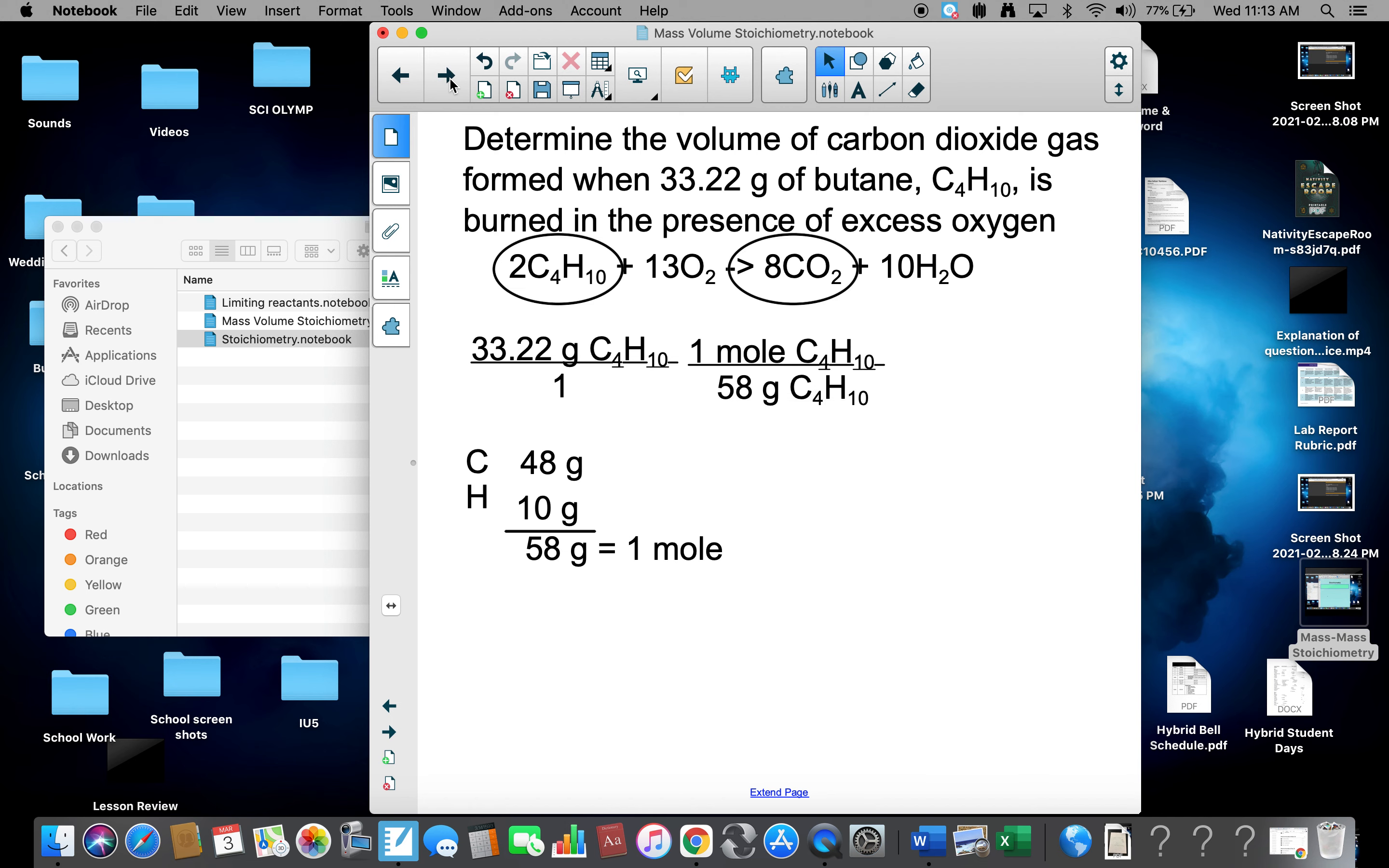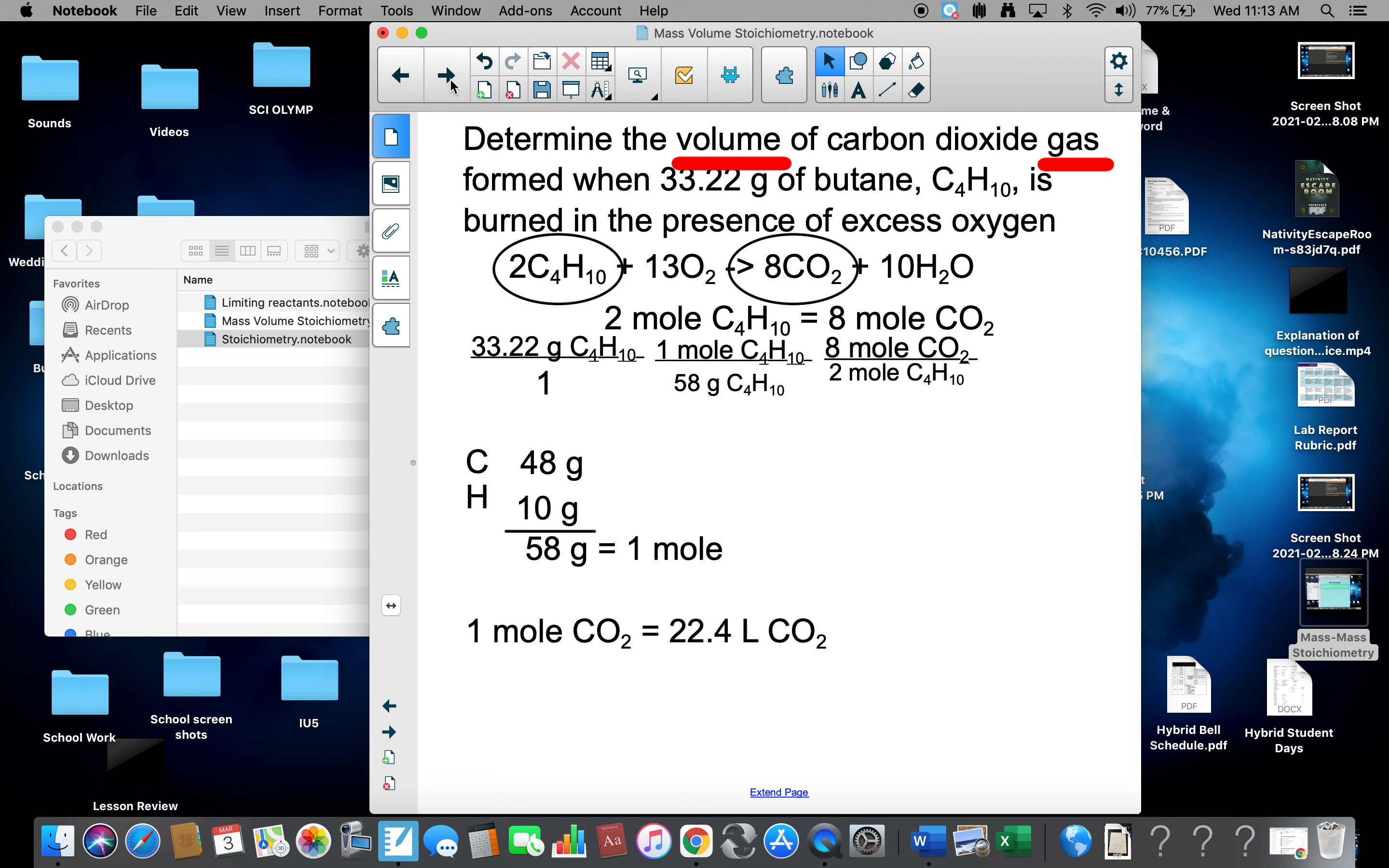From the balanced equation, 2 moles of C4H10 is 8 moles of CO2, since I'm asking you to find the volume. So our equality: 2 moles of C4H10 is 8 moles of CO2. We get a fraction of 8 moles CO2 over 2 moles C4H10. And then we're doing molar volume because we're finding volume of a gas. So therefore, 1 mole of CO2 is 22.4 liters of CO2. Put it up that way, all our units cross out, we get 51.32 liters of CO2, and that's our answer.